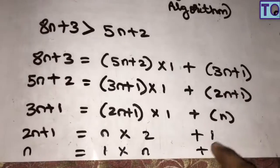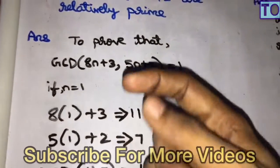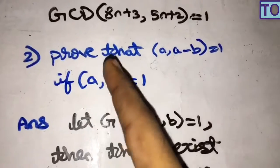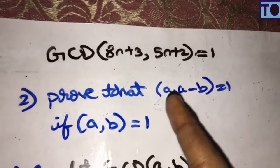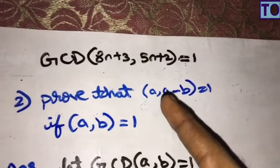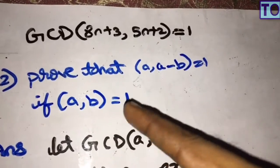Since the last non-zero remainder is 1, we conclude gcd(8n+3, 5n+2) equals 1, so they are relatively prime. Now for the second part: we prove that if gcd(a, b) equals 1, then gcd(a minus b, b) equals 1. We will prove this using the Euclidean algorithm.